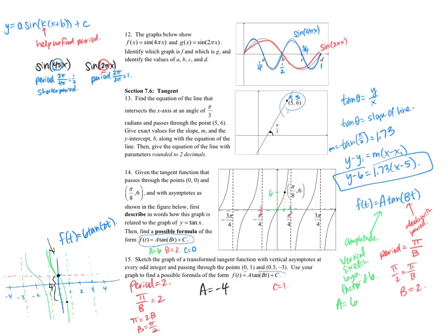And so that tells me that a is equal to negative 4. And so I can write down my function: f of t is equal to negative 4 tangent of pi over 2t plus 1. So that's my final answer, and there's my graph.